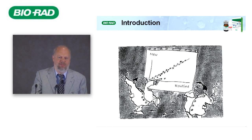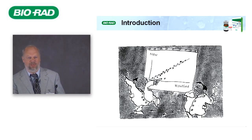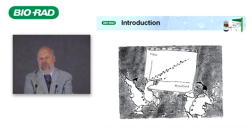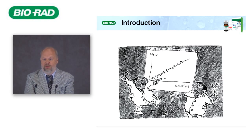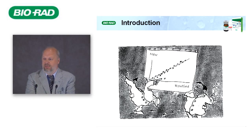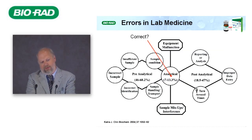In this slide you see a method comparison between a new and a routine method. This professor — I won't tell you the name — got an invitation to a congress in Hawaii to present the result. Most of us are not interested in the 99 points that fit well to the correlation, but in that single point that failed. And that's my reason for talking about third-party control.